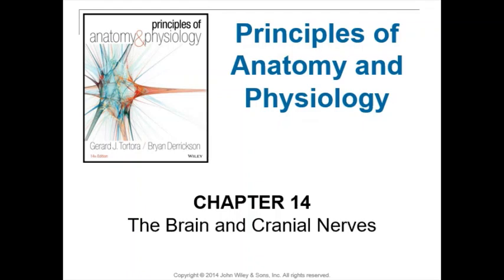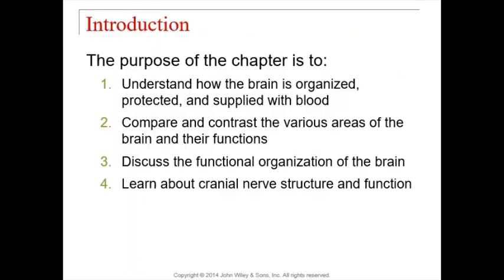Welcome to chapter 14 of Anatomy and Physiology, where we're continuing through the nervous system. By now, we're moving on to the brain and looking at nerves coming off the brain called cranial nerves. We're basically going to do the same thing for the brain and cranial nerves that we did for the spinal cord and spinal nerves — going through the anatomy and physiology, talking about how the brain and cranial nerves perform the functions of the central nervous system.